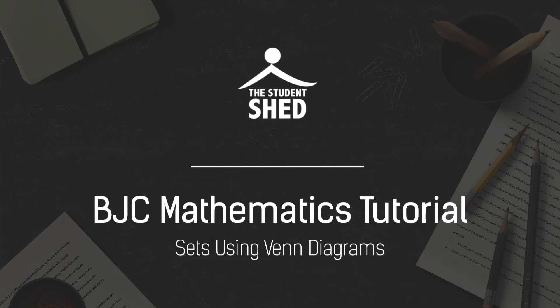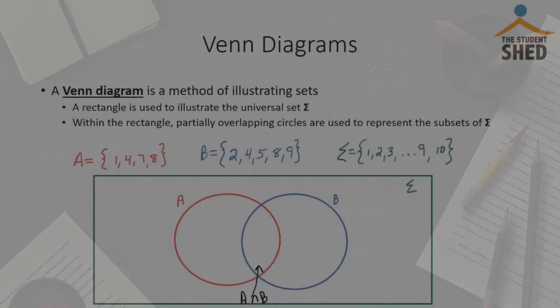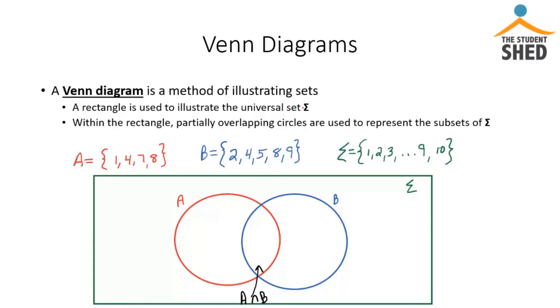All right, let's look at Venn diagrams. Venn diagrams are a method of illustrating sets. This helps to visualize the relationship between sets and it might actually help with better understanding union and intersection between sets.